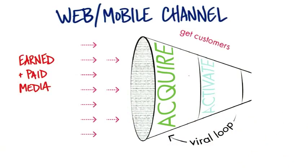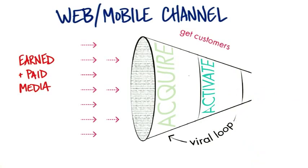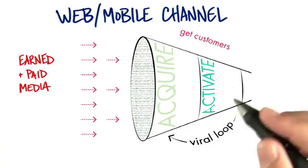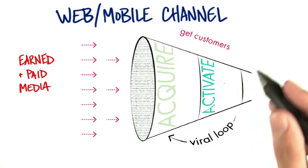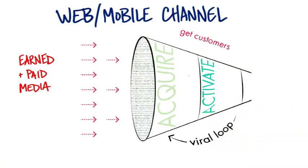But the next step is much harder. After I acquire them, I want them to do something. I don't just want them to look and go away — I want them to either pay for the product, sign up for something, or become a user. That is what activate means: I want you to engage with my website or app and do something I have planned for you to do, like open your wallet.